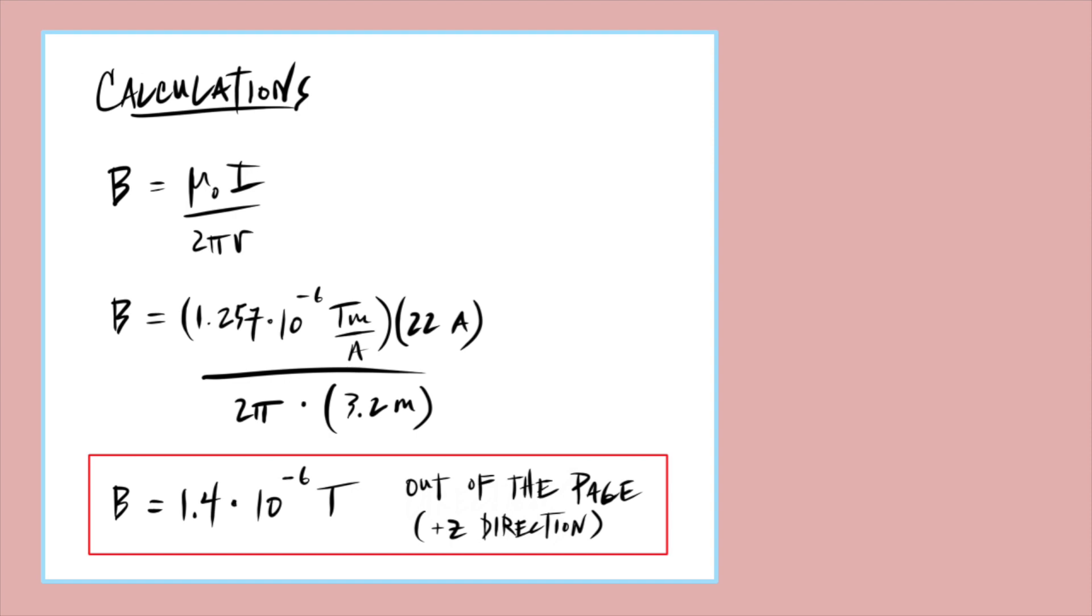So in conclusion, the electromagnetic field at that location has a strength of 1.4 times 10 to the negative 6 tesla directed out of the page, or as we call it in physics and mathematics, the positive z direction.